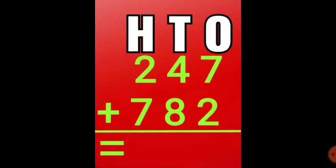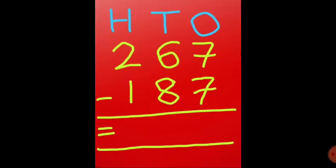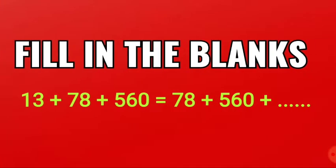Next, 7 minus 7 is 0. 6 will be converted to 16. 16 minus 8 equals 8, and 1 minus 1 is 0. 13 is absent in the right hand side.